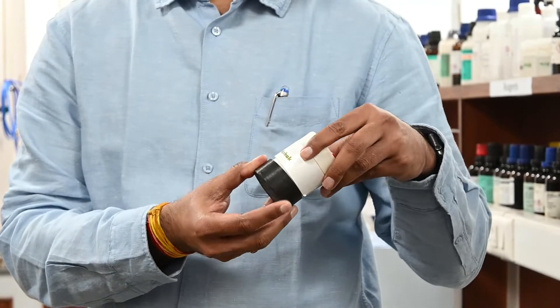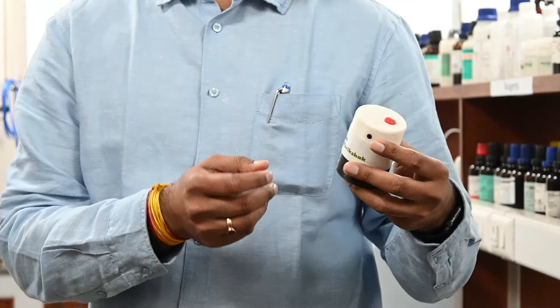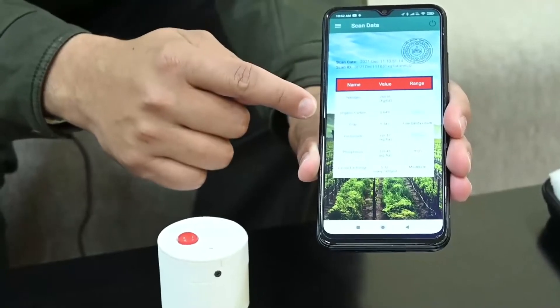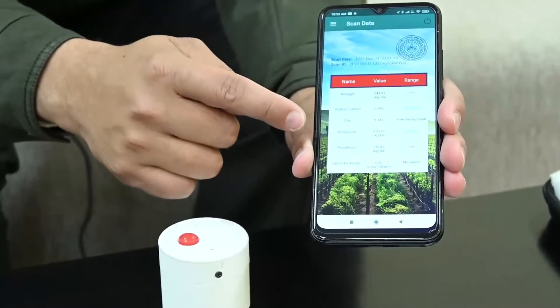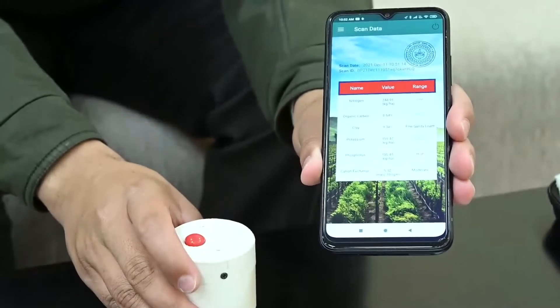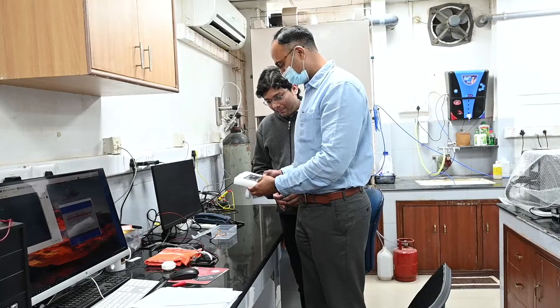In this direction, Bhupalikshak is a classic example, which is a handheld device we have developed that can predict the properties of soil in less than one minute. This is just one example, and we are trying many other such disruptive ideas.